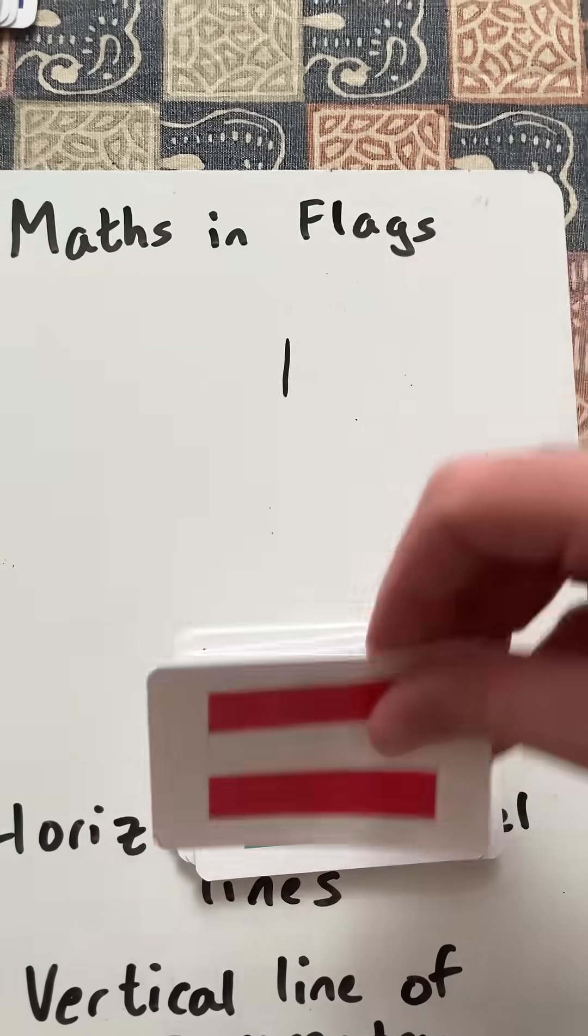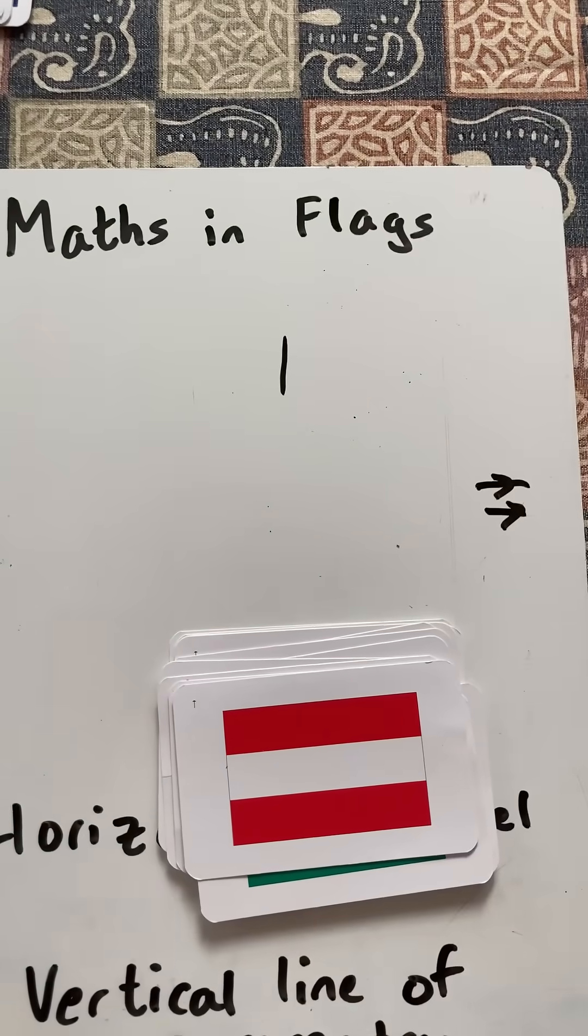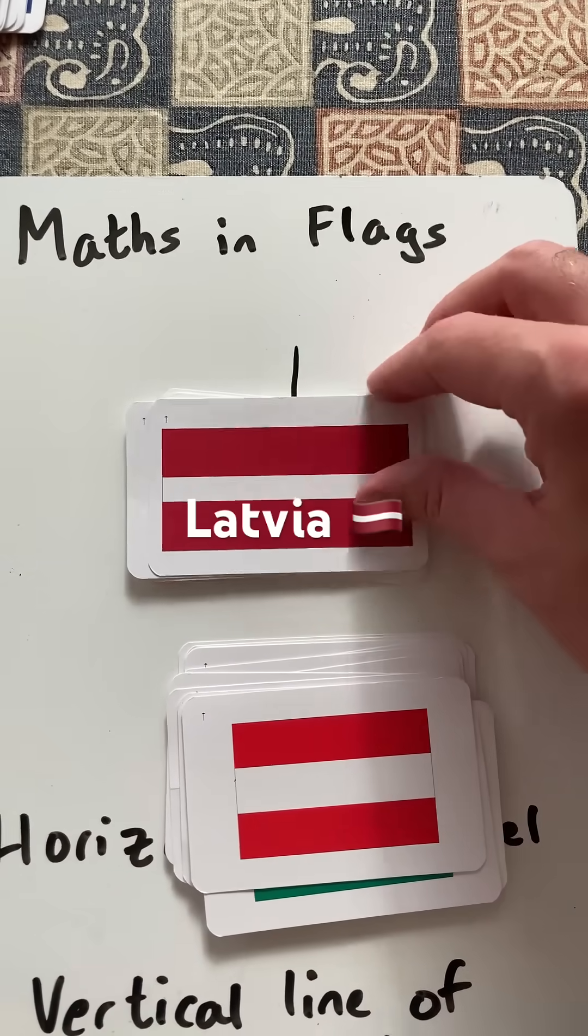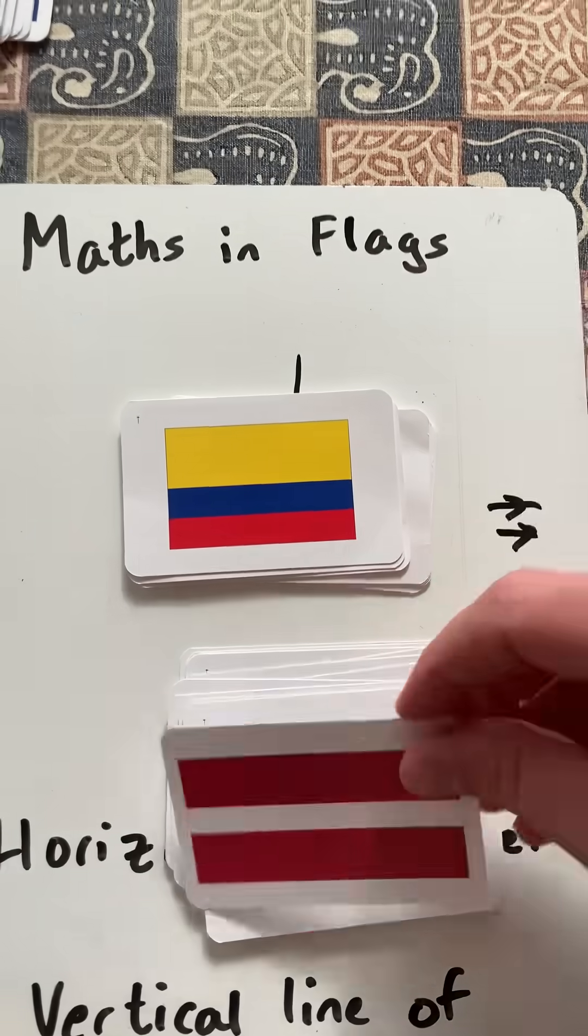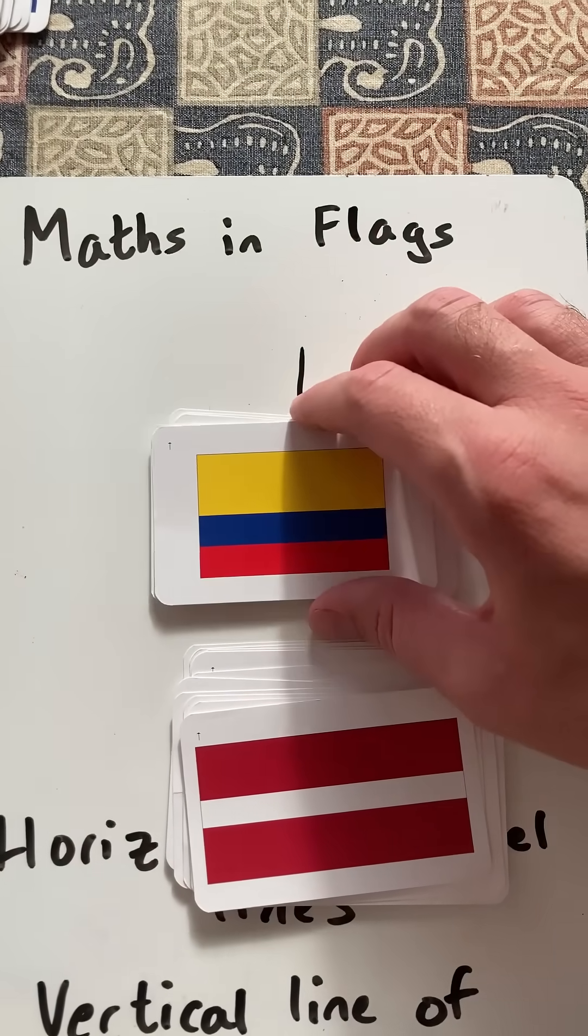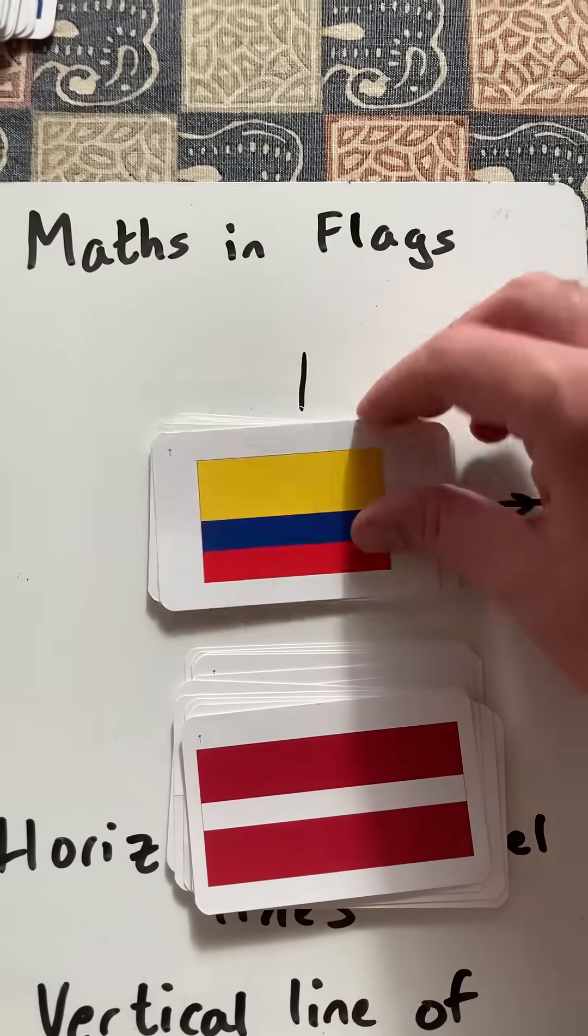Other flags where the sections aren't equal include Latvia and Colombia. It's got three sections with parallel lines, but now they're not all equal.